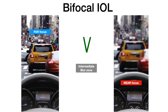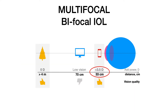With a bifocal-multifocal IOL, you will have at the same time on the retina two types of images: one with sharp far focus and blurred near focus, and one with sharp near focus but blurred far focus. Your intermediate vision will also be blurred, so if you work on a computer frequently, your vision quality at that distance will not be as good.